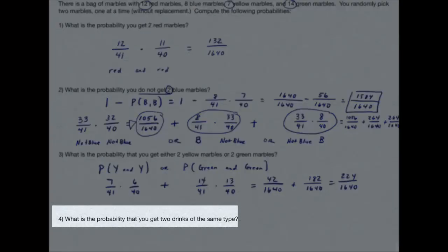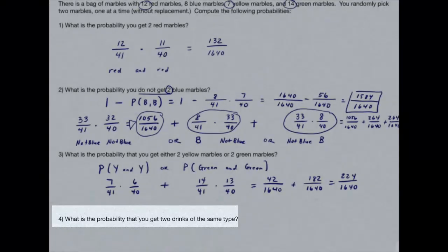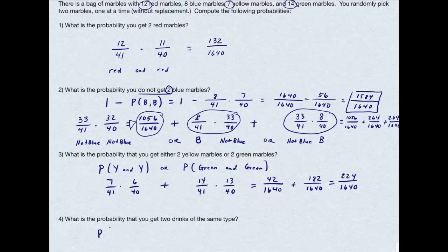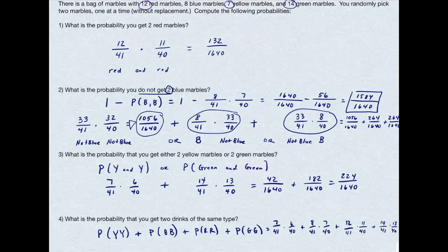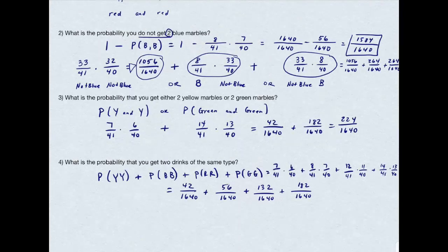The last one is the trickiest of these four. It asks for the probabilities that you get two drinks of the same type. That means the probability I get a yellow and a yellow, or the probability that I get a blue and a blue, or the probability I get a red and a red, or the probability I get a green and then a green. Again, the 'or' translates to the addition, so I've gone ahead and done that. And these are as follows. And once I work up my multiplication, I'll get this, and then finally my answer is 412 divided by 1640.